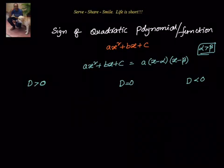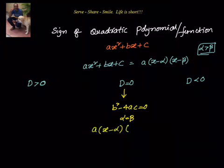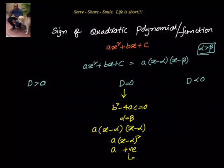Now let us go to the second scenario where b² − 4ac equals zero. That means alpha equals beta. So our expression becomes a(x − alpha)(x − alpha), which is a(x − alpha)². Since (x − alpha)² is always positive, the sign of the quadratic polynomial is equal to the sign of a in this case.